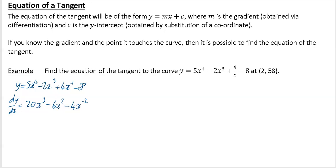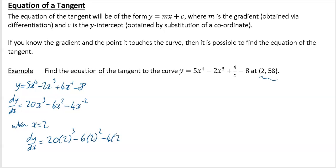The point we're looking at is (2, 58), so that means the x value is 2. When x equals 2, we find dy/dx and we show our working out by showing what we're substituting in. Instead of x, we're writing 2. So: 20 times 2 cubed minus 6 times 2 squared minus 4 times 2 to the power of minus 2. Put that in on your calculator and you're going to get 135.